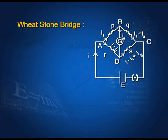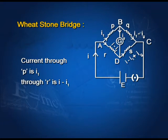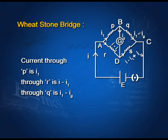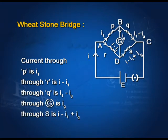If current from the cell is I and current through P is I1, then current through resistance R is I minus I1. If point B is at high potential, then current through the galvanometer is IG as shown in the diagram. Current through resistance Q is I1 minus IG, and current through resistance S is I1 plus IG.